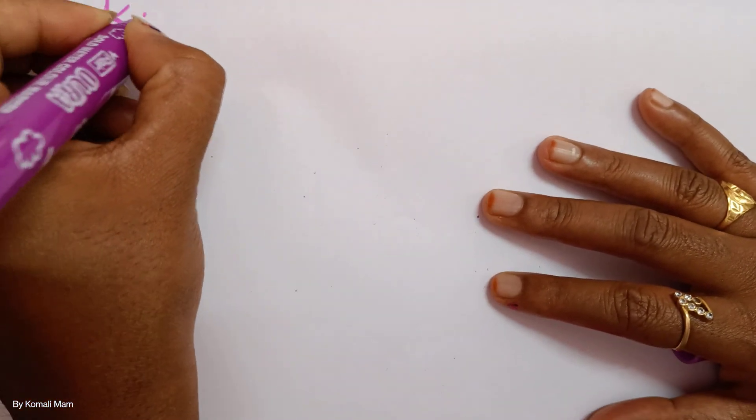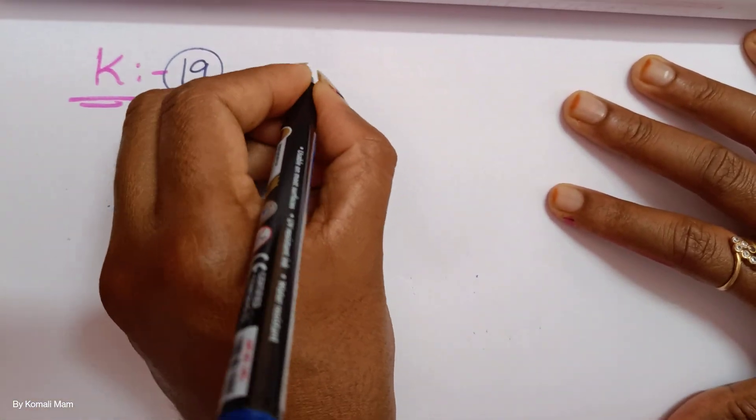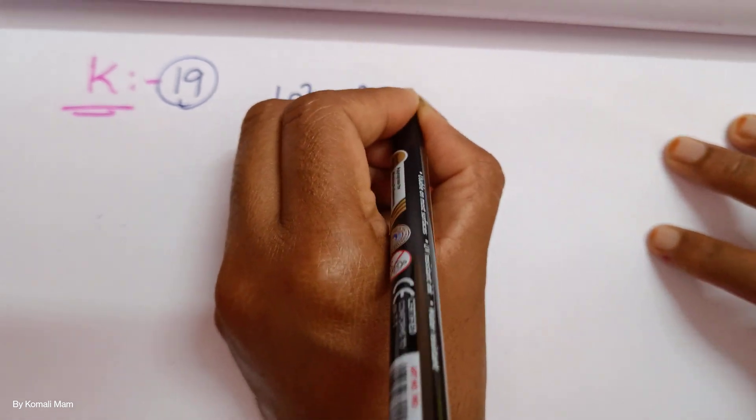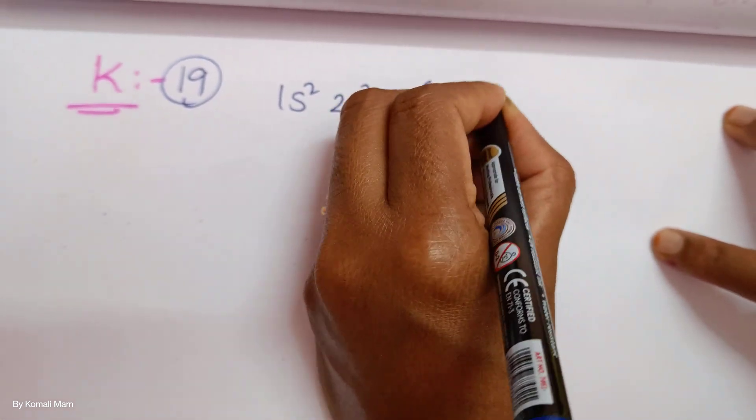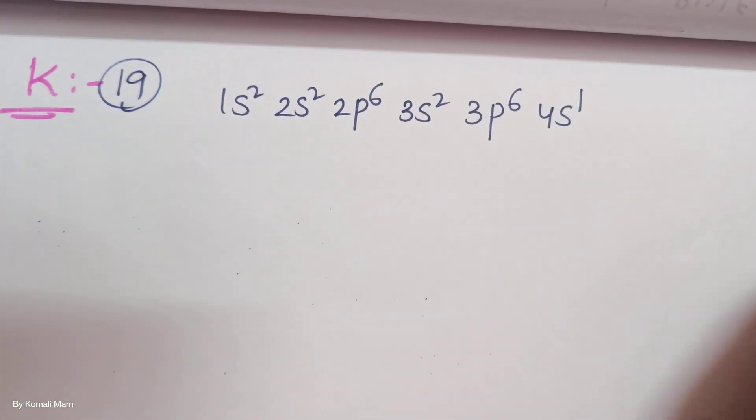Now let us see for potassium. Is your values correct or not? 19 is atomic number. 1s2, 2s2, 2p6, 3s2, 3p6, 4s1 is the configuration.